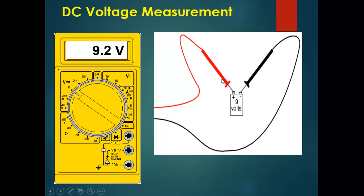For DC voltage, always try to connect the positive terminal with the red probe and the negative terminal with the black probe — that is how the meter will read a positive voltage. If you reverse the polarity, you will see a negative sign appear next to the measured value, indicating that the probes are connected in reverse.